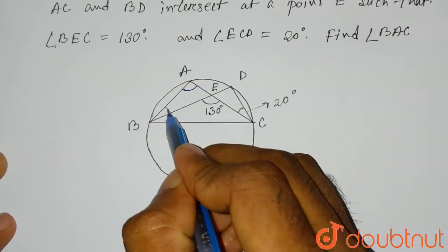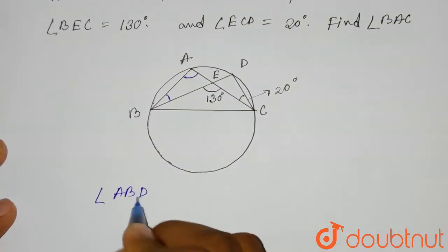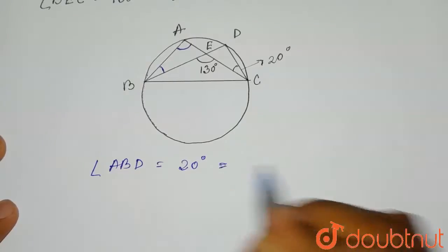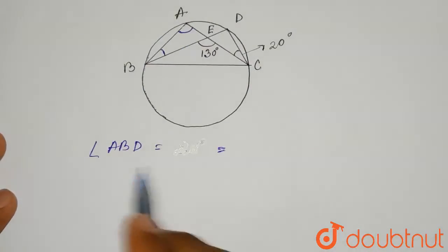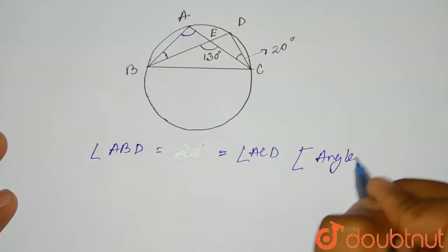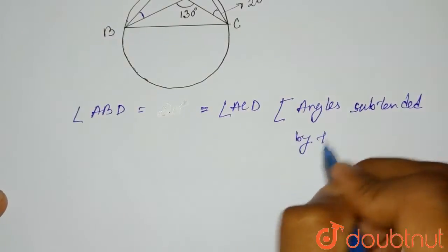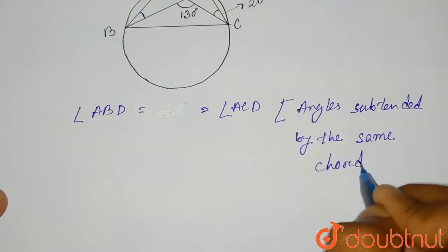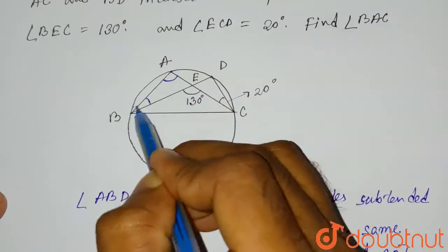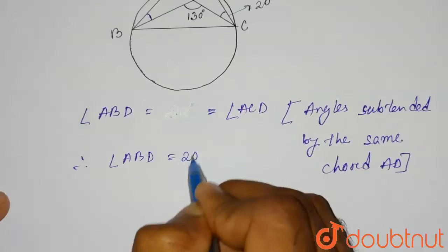That means angle ABD will also be 20 degrees. Why? Because they are angles subtended by the same chord. Angle ABD equals angle ACD, because they are angles subtended by the same chord AD. As you can see in the diagram, if we consider chord AD, it subtends two angles: ABD and ACD. So the angles will be equal. Therefore, angle ABD equals 20 degrees.